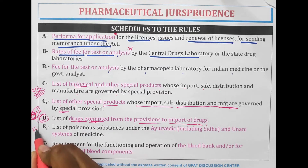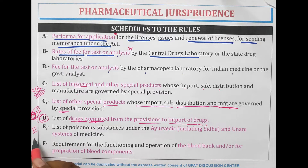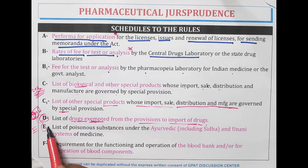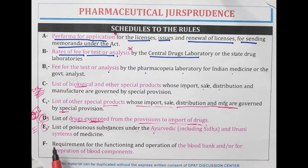Schedule E — E for evil, and poison is evil. So Schedule E1 is the list of poisonous substances under the Ayurvedic, including Siddha and Yunani, system of medicines.